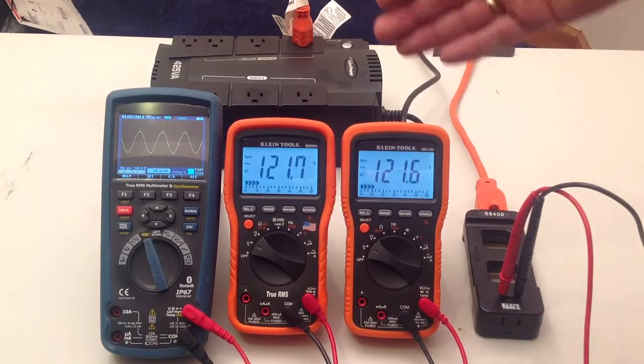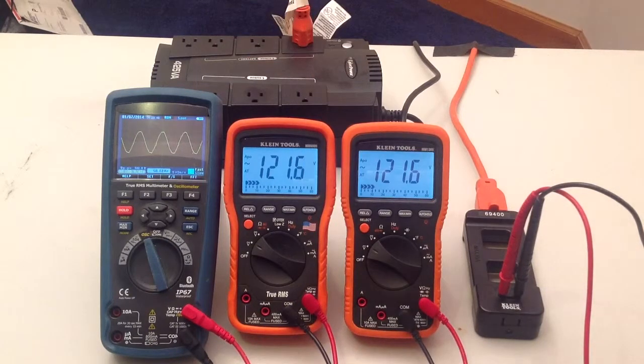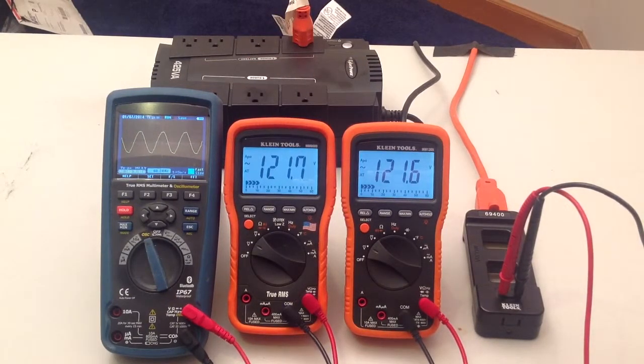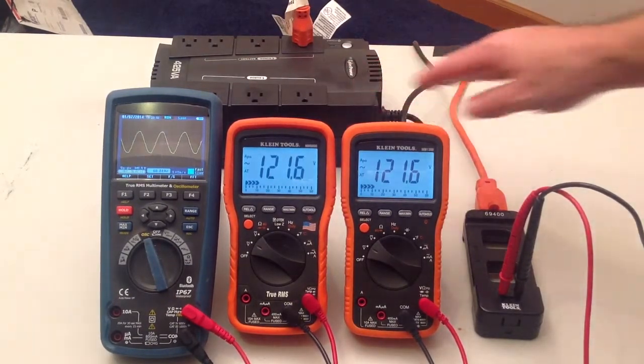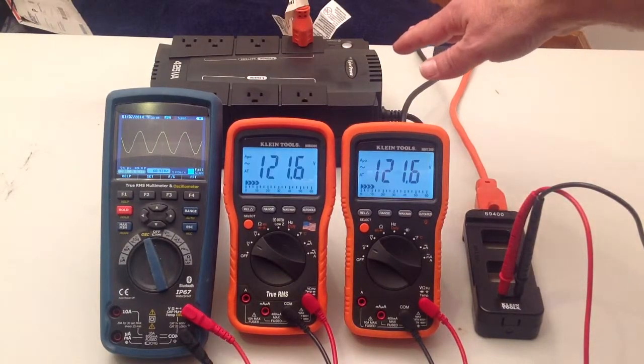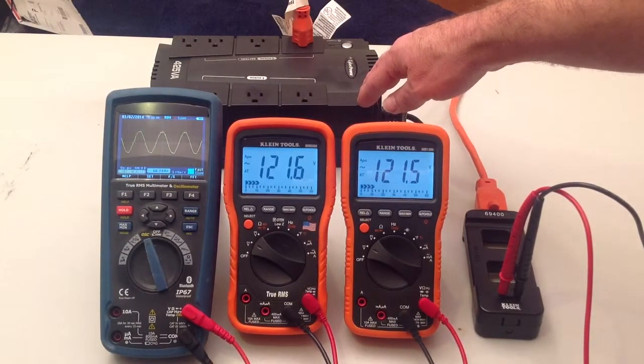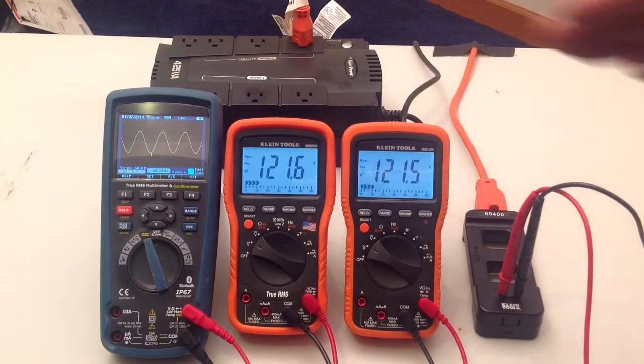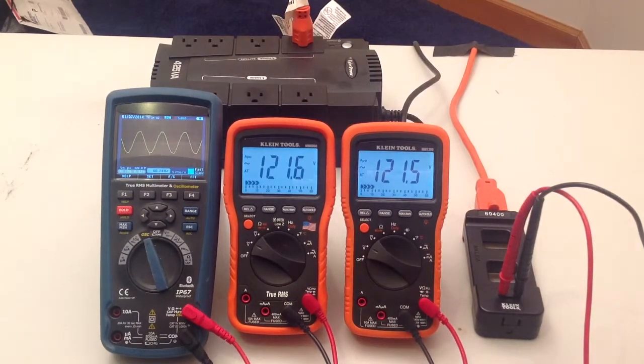Right now, because it is a pure sine wave, these two meters show the same voltage. I am using a battery backup system. I am going to kill the power to this battery backup. This guy is going to then generate an AC waveform. However, it is not going to be a clean, perfect sine wave like you see there.